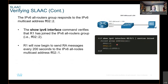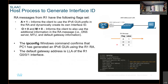The all-routers group responds to the IPv6 unicast address FF02::2. If you type show IPv6 interface G0/0/1 pipe section joined, you can see that this router has joined both the all-nodes and the all-routers groups. R1 will now begin to send RA messages every 200 seconds to all IPv6 all-nodes multicast addresses. The RA messages from R1 have A=1, which informs the client to use the IPv6 GUA prefix in the router advertisement and dynamically create its own interface ID.